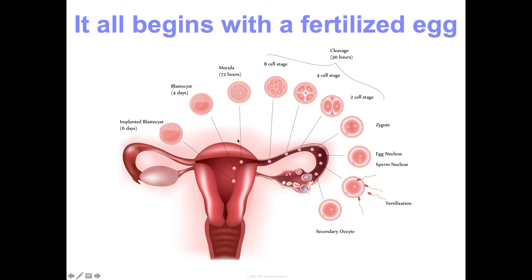This is the female reproductive system. Fertilization of the sperm and egg happens in one of the fallopian tubes, and as that fertilized egg travels through the fallopian tube into the uterus to hopefully implant in the endometrial lining, cell division is happening. One cell becomes two, two becomes four, four becomes eight — and even at 72 hours, three days post-fertilization, you're just this clump of identical cells, and then differentiation starts to happen.